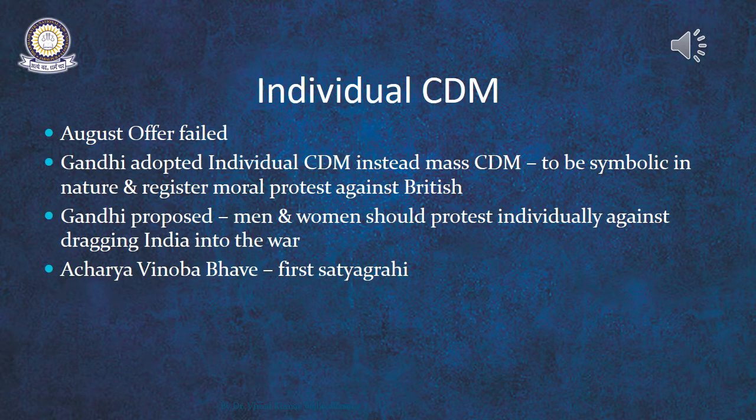Acharya Vinoba Bhave was selected by Gandhi as the first Satyagrahi. On 17th October 1940, he offered Satyagraha by delivering an anti-war speech in the village of Paunar near Wardha. He was arrested on 21st October, followed by Jawaharlal Nehru, Sardar Vallabhbhai Patel, and others. Subsequently, all important leaders in different provinces — including Congress ex-ministers, parliamentary secretaries, members of the AICC and CWC, former members of central and provincial legislatures, and members of district and town Congress committees — courted arrest. The movement was carried on to the close of 1941, spread all over the country, and about 25,000 Satyagrahis courted arrest. The movement was entirely non-violent.